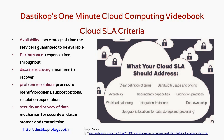The first one is availability. Suppose you are using a cloud computing resource — the percentage of time the service is guaranteed to be available. For example, if you are using it for one year, 365 days, how many days is it available? It could be 365 out of 365 days, that is 100% guarantee, or it could be 99% guarantee. This comes under availability.